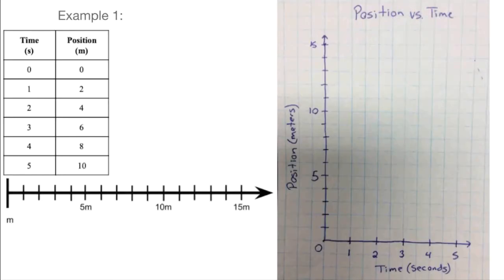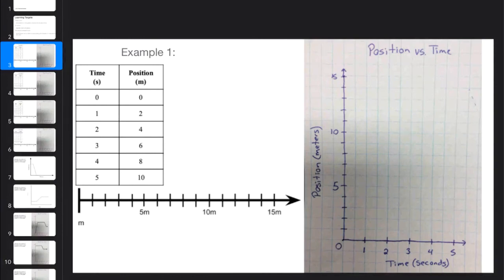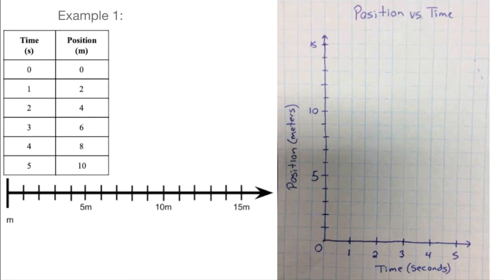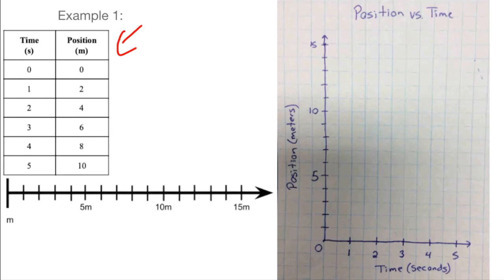Here's our first example. This is somewhat from your investigate that we were working on the previous day, so you should be familiar with how to set these up. If I was looking at just the data table, what do we have going on? It looks like we're starting at zero. Zero is our origin — that's where we're measuring from. Our origin is what we're measuring from zero, so that's kind of our frame of reference. We're starting at the origin on this one.